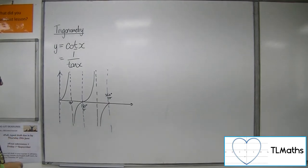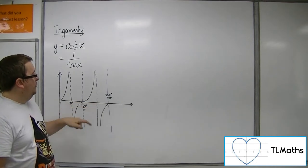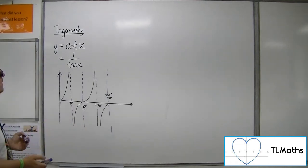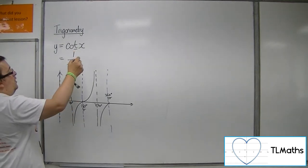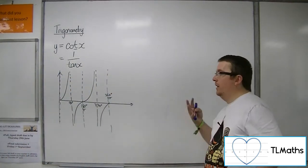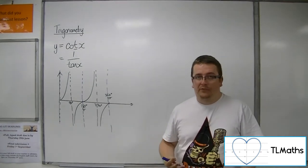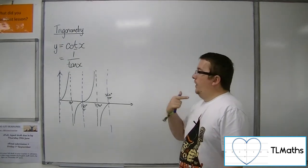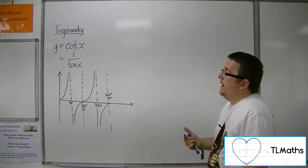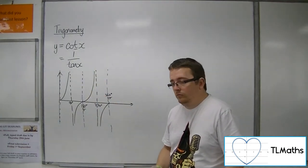Now when tan hits 90 or 270, let's draw on 270. Then you've got 1 over what is effectively infinity. Obviously, we can't write it as 1 over infinity, but what we can say is that as x approaches 90 degrees or pi over 2, then our fraction will tend towards 0.